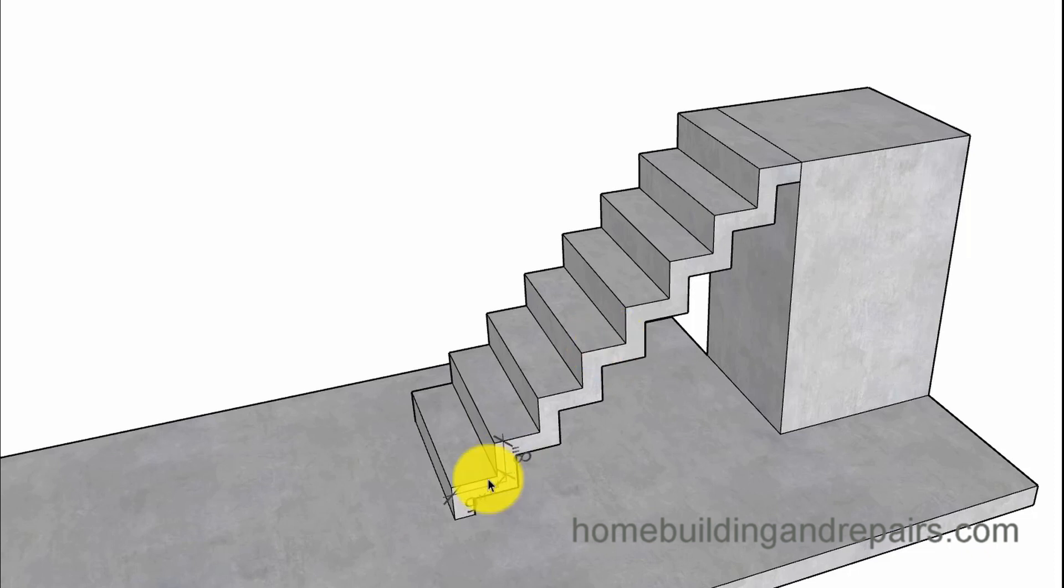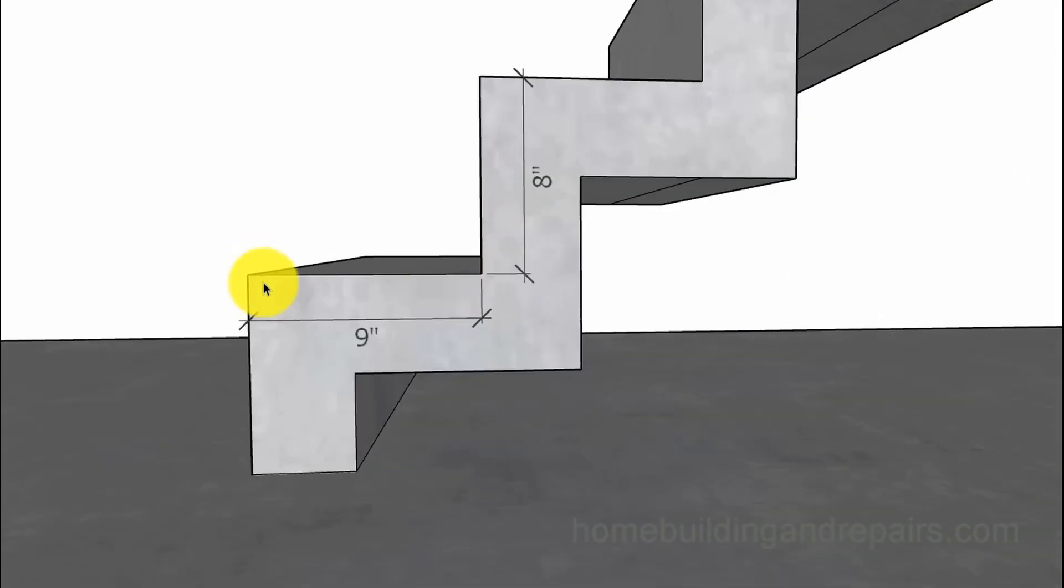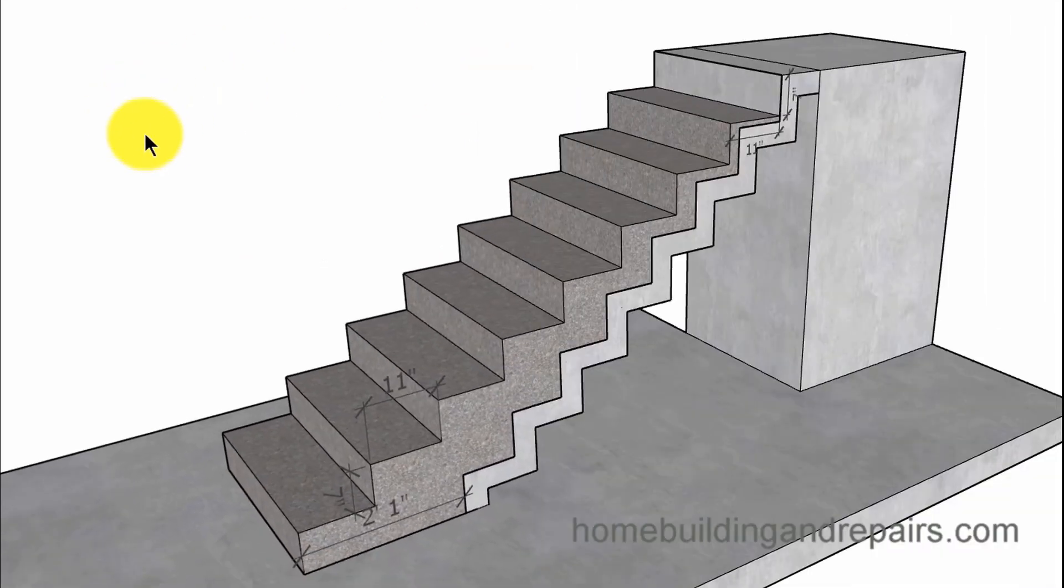They said it was sturdy and strong, but the steps sounded like they were a little narrow. In my example, I'm going to put nine-inch treads and eight-inch risers. This would provide you with one method for a repair - you would simply add a step to the stairway.